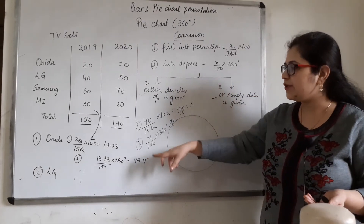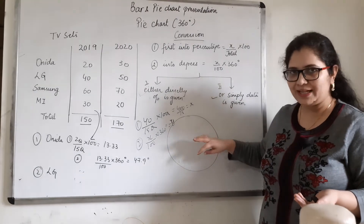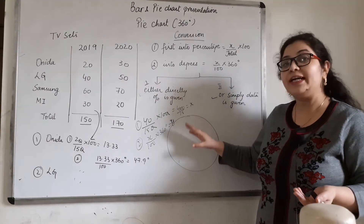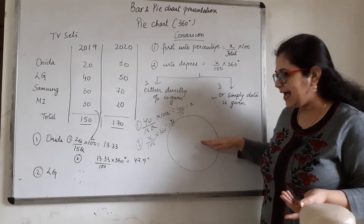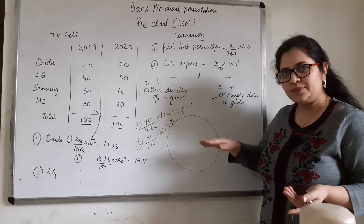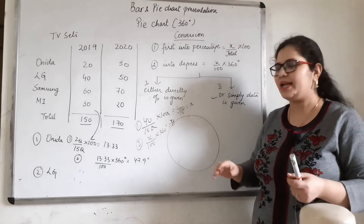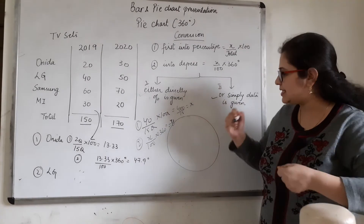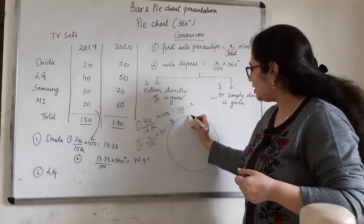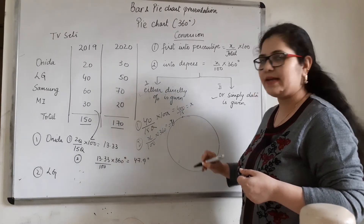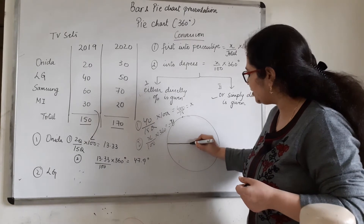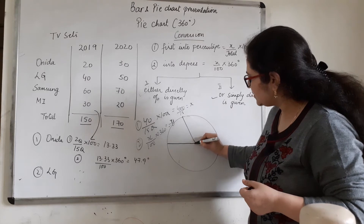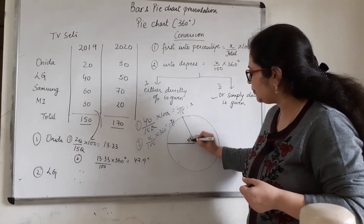Let's say the first value is 47.9 degrees. You will draw a circle with a compass. Then put the diameter straight. Take the first degree — 47.9 — and if you put the protractor here it will become an acute angle. So let's set this angle at 47.9 degrees. I will draw it roughly. Something like this — this is 47.9 degrees.